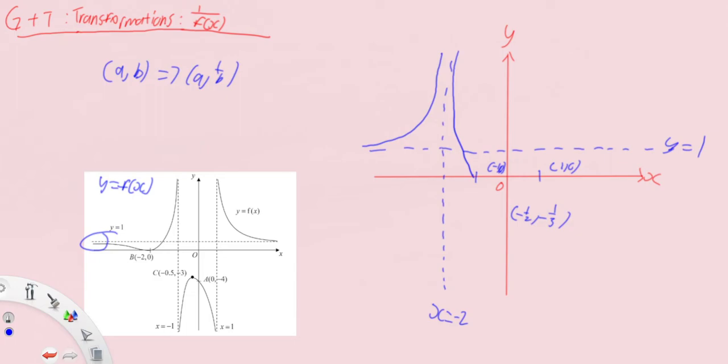So our point, let's say the point is somewhere around here, our point would then have—it was a maximum point, it becomes a minimum point. And now it'll go back up from here.